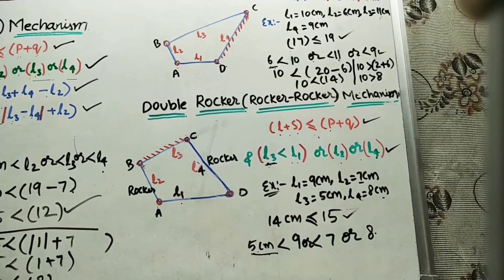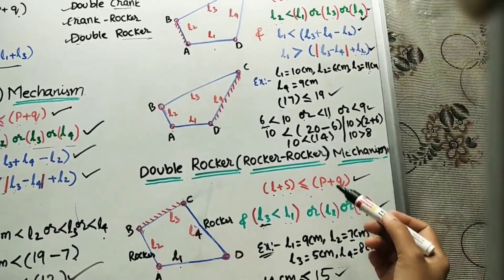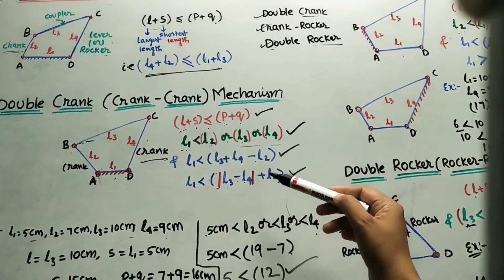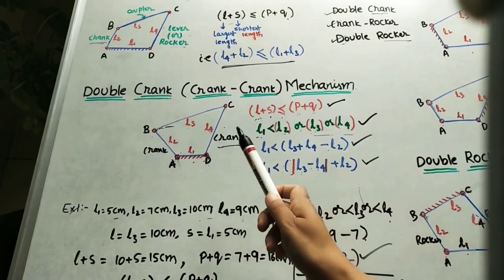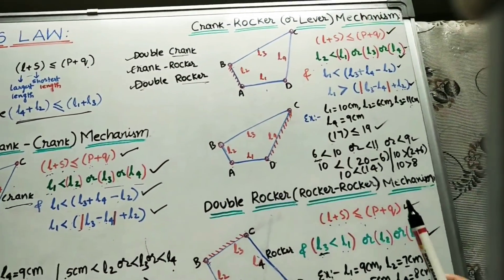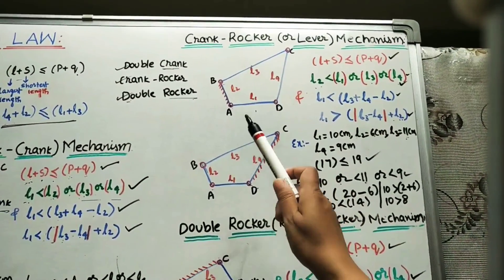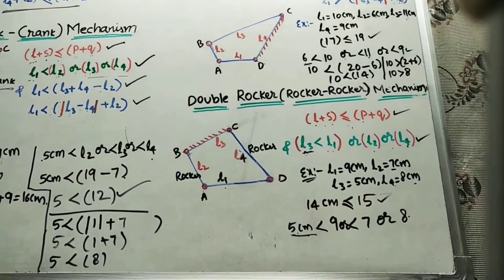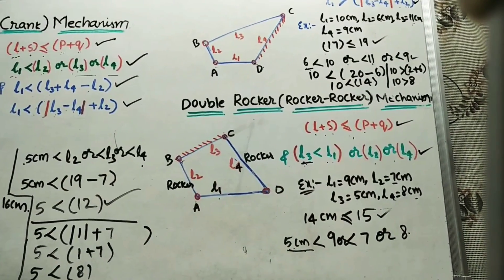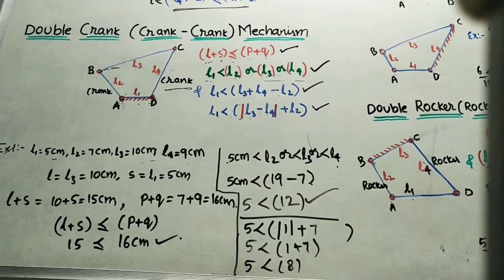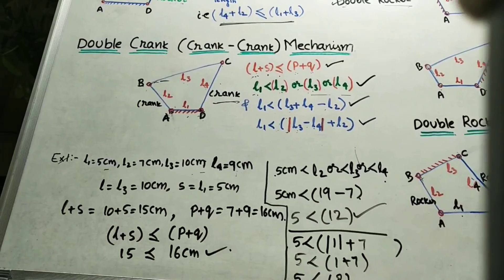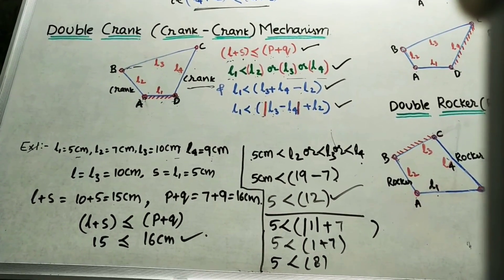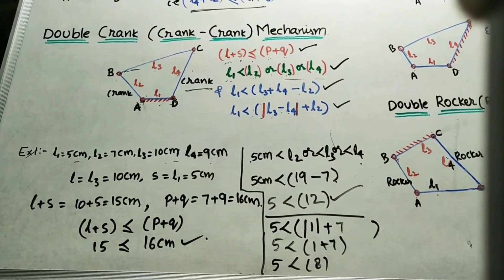We need to remember these conditions and use them to tell whether the given mechanism is a double crank mechanism, crank rocker mechanism, or double rocker mechanism. This is a very important topic for competitive exams, where we can identify which link is the fixed one and what type of mechanism it is.